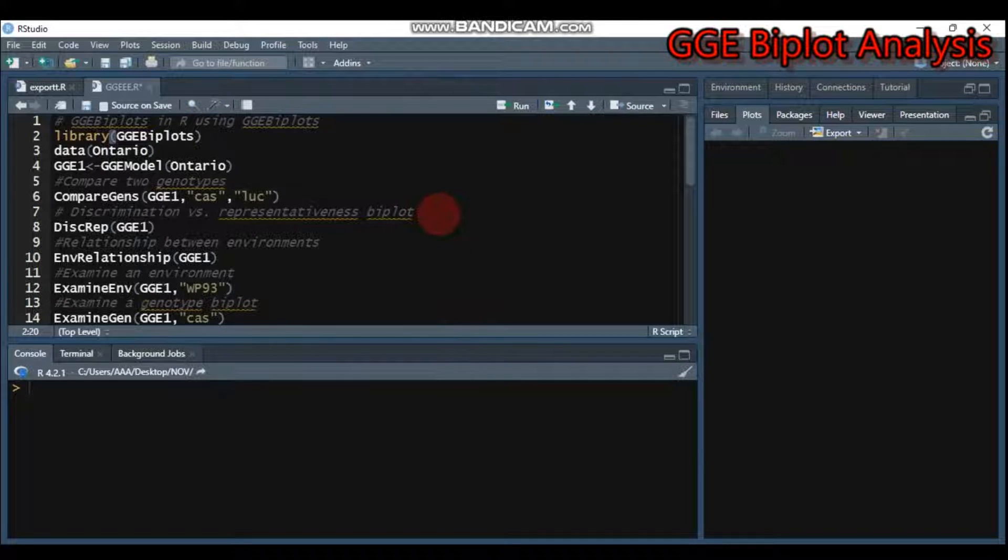Hello everyone, welcome to my channel. Today we're going to discuss genotype plus genotype by environment interaction analysis using R software, more specifically using the GGE biplot package. In previous tutorials, we tried different packages like STAR and Metan, as well as the GGE biplot GUI package.